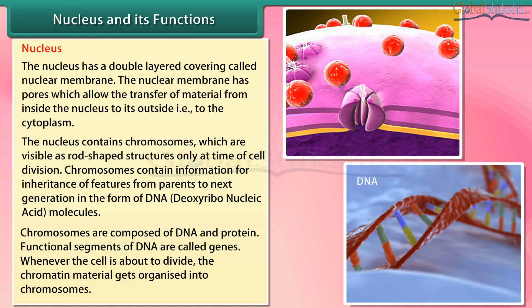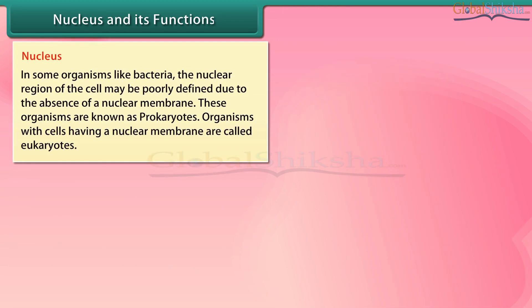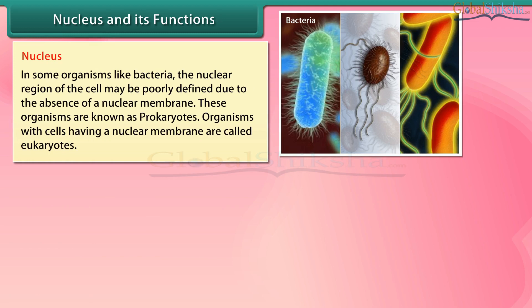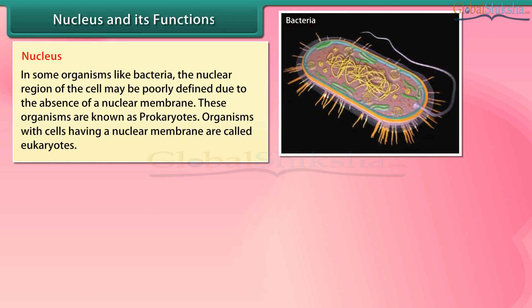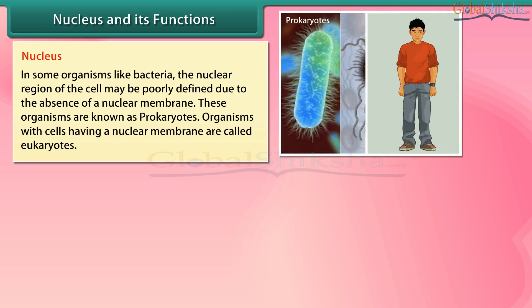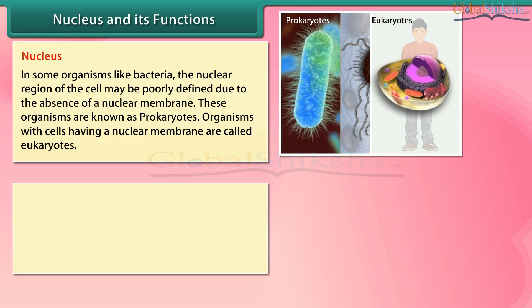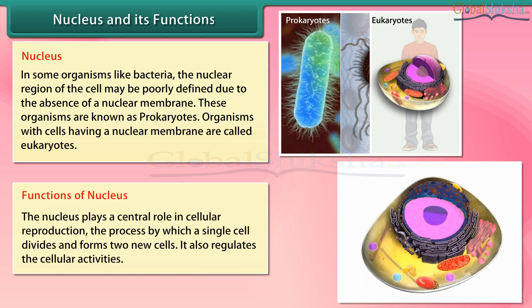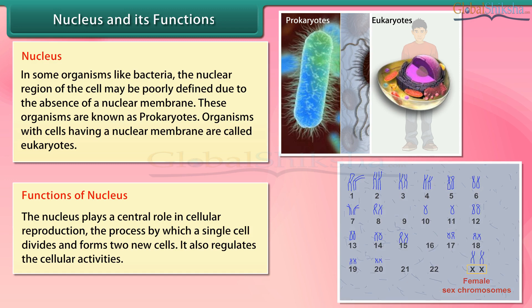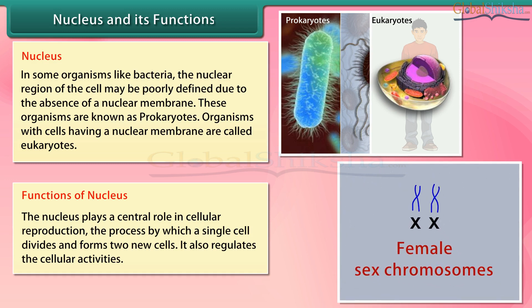Whenever the cell is about to divide, the chromatin material gets organized into chromosomes. In some organisms like bacteria, the nuclear region of the cell may be poorly defined due to the absence of a nuclear membrane. These organisms are known as prokaryotes. Organisms with cells having a nuclear membrane are called eukaryotes. The nucleus plays a central role in cellular reproduction — the process by which a single cell divides and forms two new cells. It also regulates cellular activities.